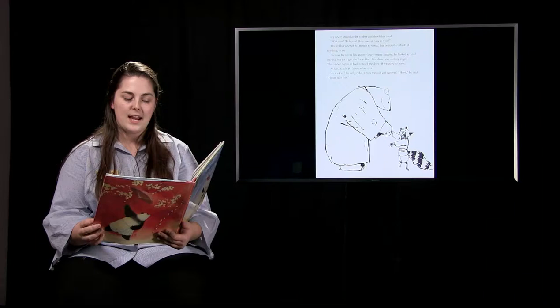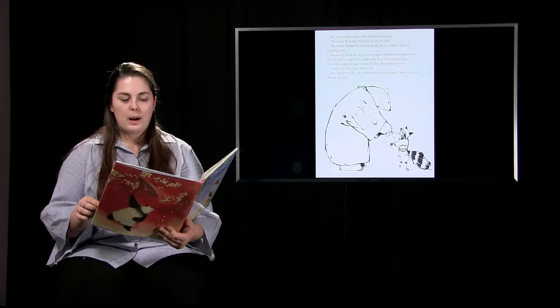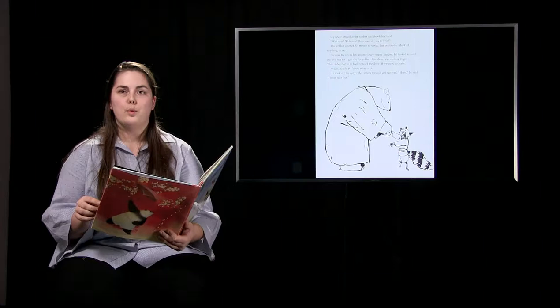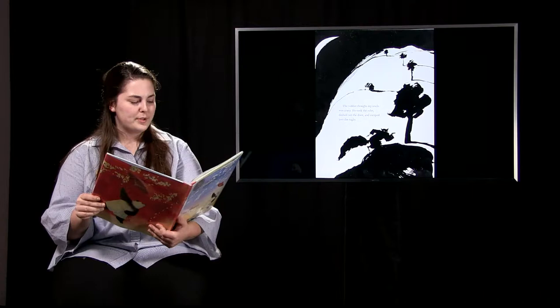My uncle smiled at the robber and shook his hand. Welcome, welcome. How nice of you to visit. The robber opened his mouth to speak, but he couldn't think of anything to say. Because Rye never lets anyone leave empty-handed, he looked around the tiny hut for a gift for the robber. But there was nothing to give. The robber began to back toward the door. He wanted to leave. At last, Uncle Rye knew what to do. He took off his only robe, which was old and tattered. Here, he said, please take this. The robber thought my uncle was crazy. He took the robe, dashed out the door, and escaped into the night.